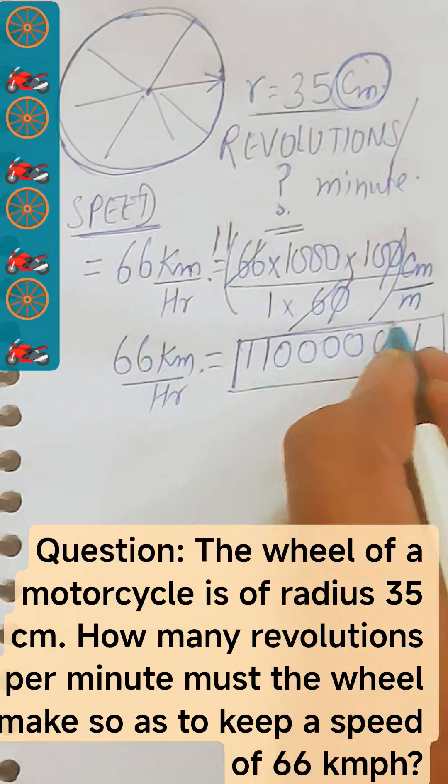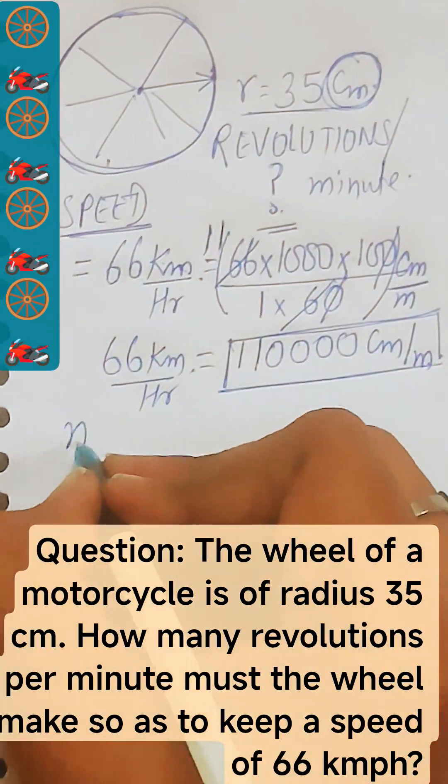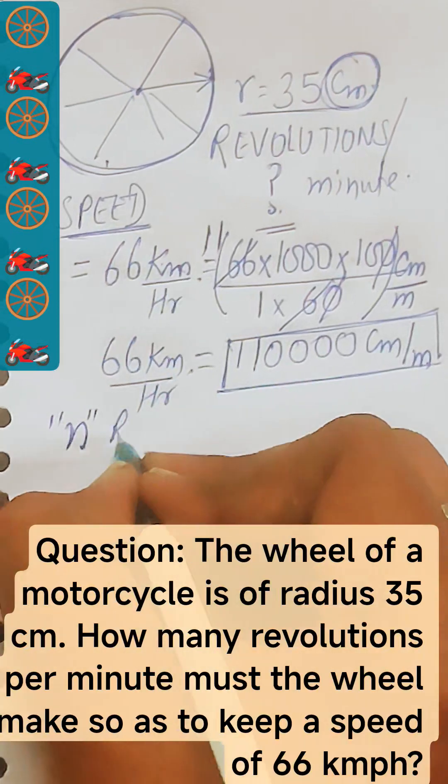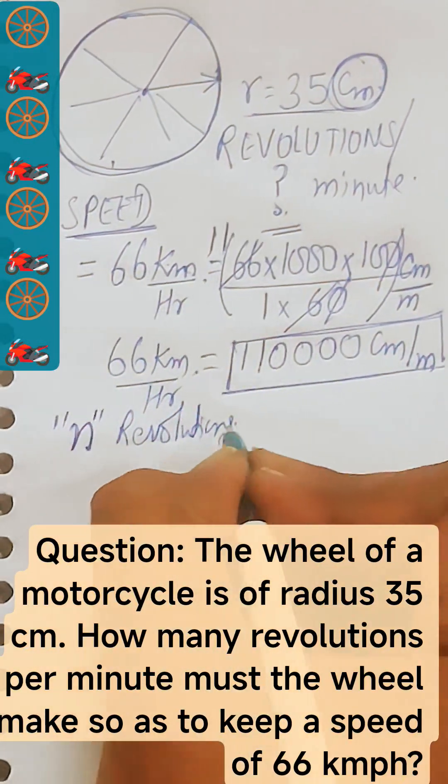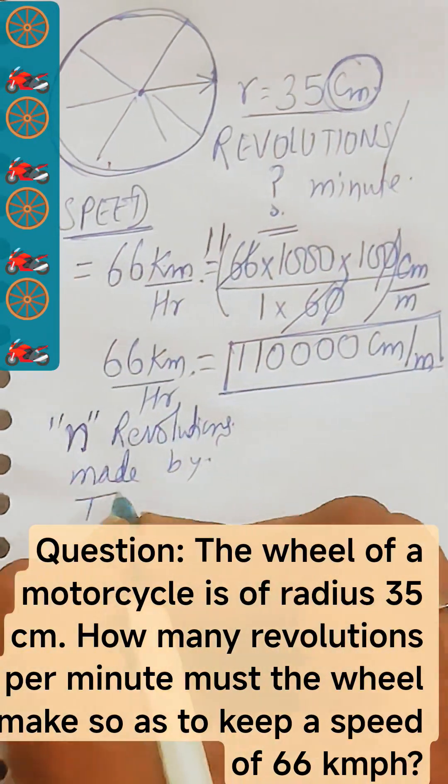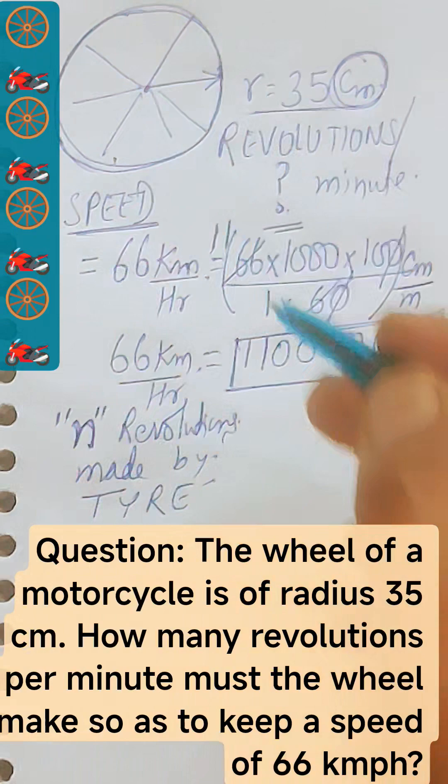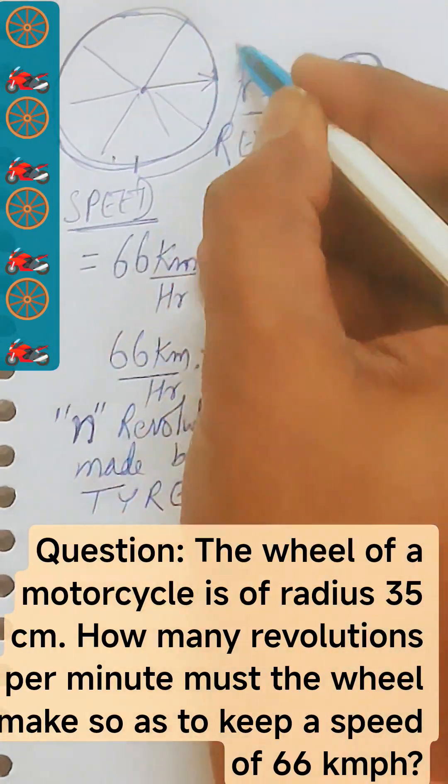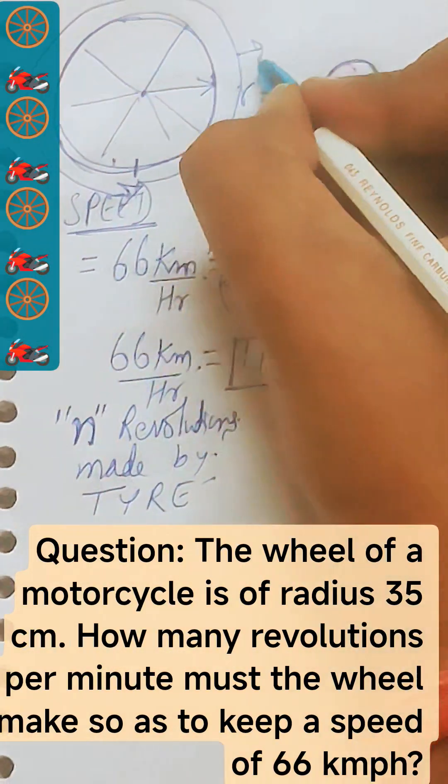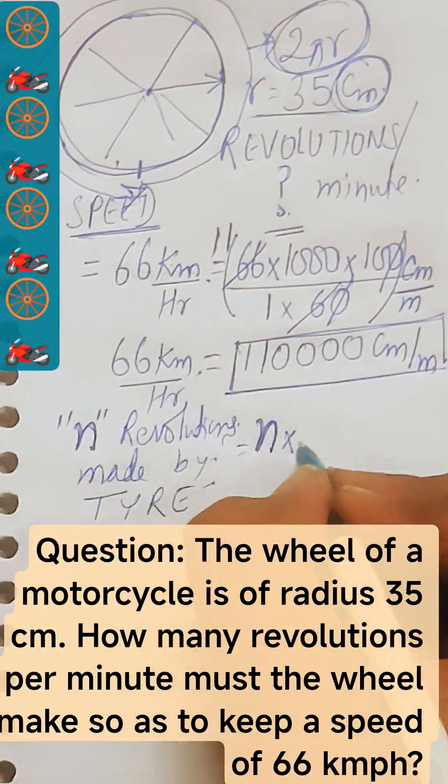Now to achieve this speed, what we need to do, let us say this tire take n revolutions. To achieve this speed, let us say n revolutions made by tire of the motorcycle. So when n revolutions will be made, what distance will be covered? This will be equal to this much, that is nothing but its circumference which is 2 pi r every time. And this 2 pi r will be multiplied with this n revolutions.